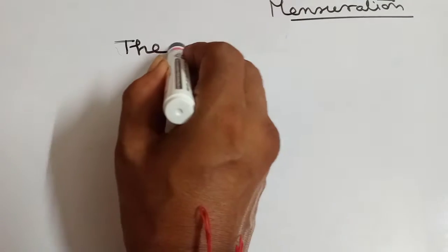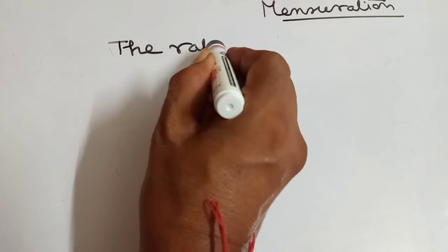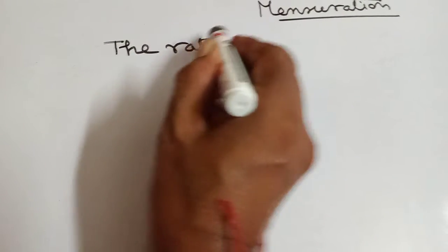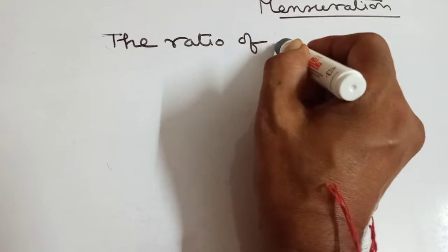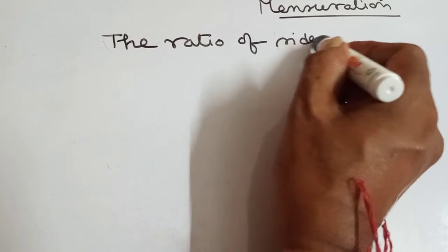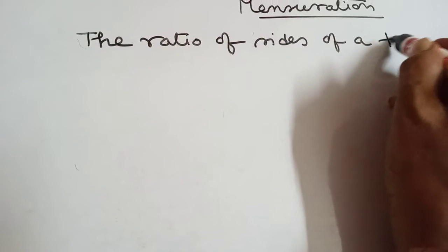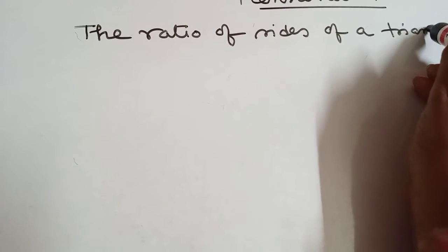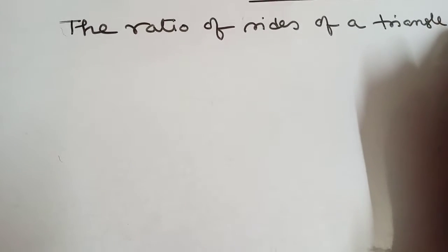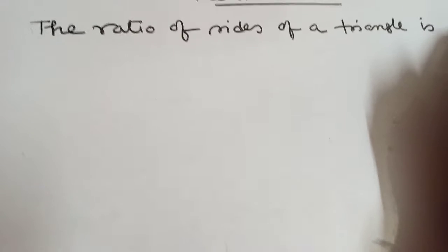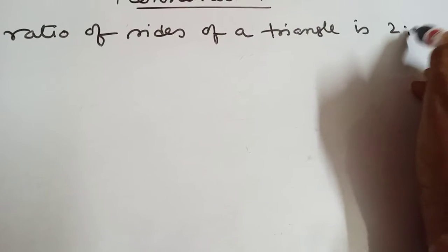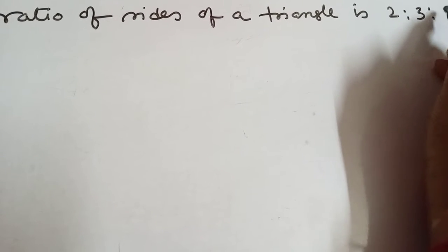The ratio of sides of a triangle is 2:3:5.